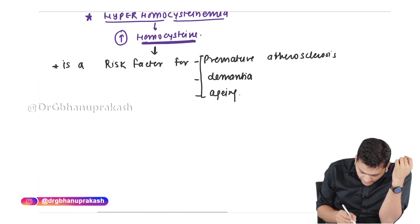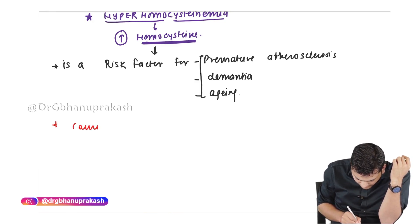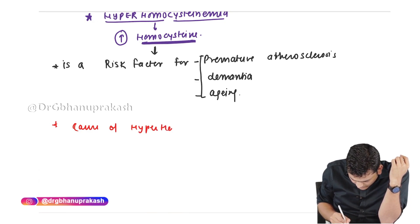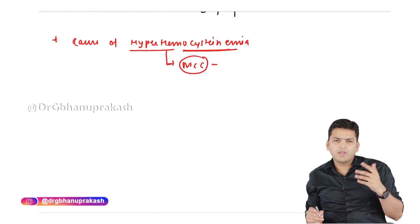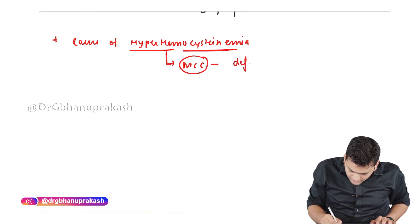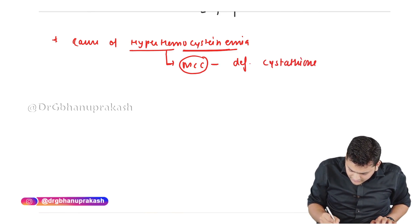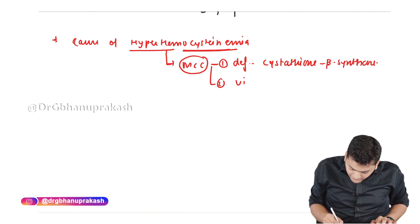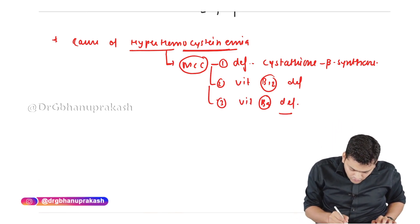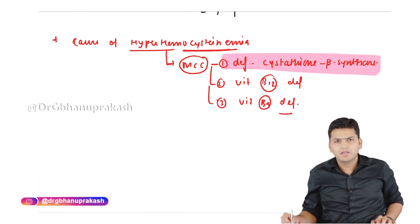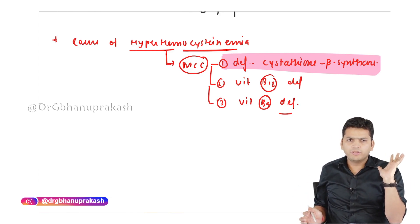The causes of hyperhomocysteinemia: the most common cause is deficiency of cystathionine beta synthase. The second most common cause is vitamin B12 deficiency, and the third most common is vitamin B9 deficiency. These are the three deficiencies that can lead to hyperhomocysteinemia. The symptoms are going to remain the same regardless of which of the three is deficient.